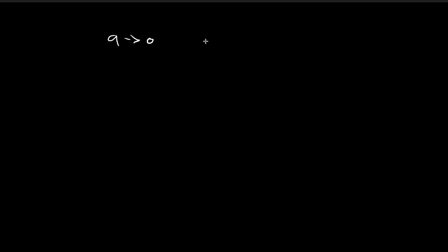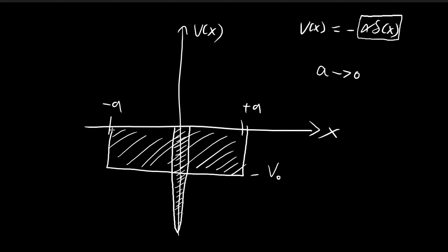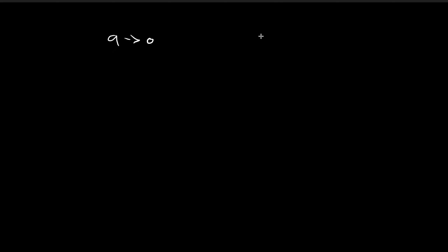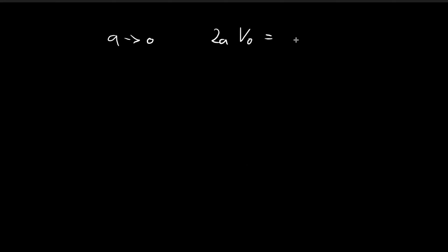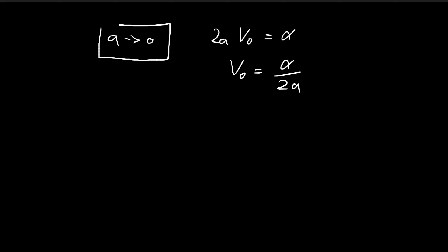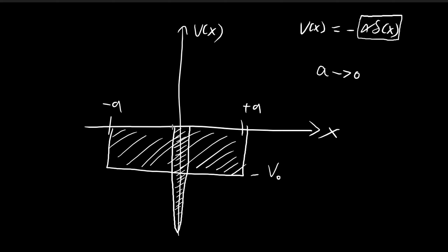This is the requirement we impose on the finite square well: we let A tend towards 0 and maintain the area at the value alpha. That means the length 2A multiplied by the height V0 must always equal alpha, so V0 = alpha / 2A. These are the two restrictions, and by imposing them we arrive at the Dirac delta potential.